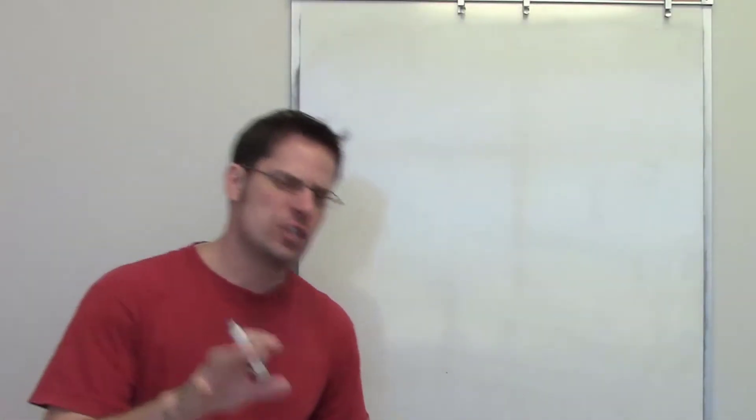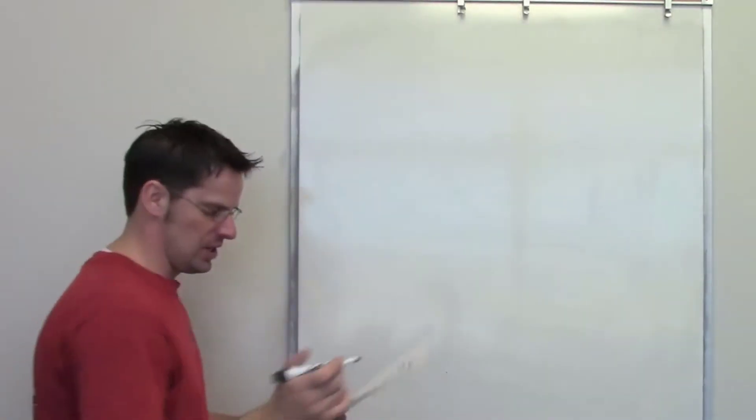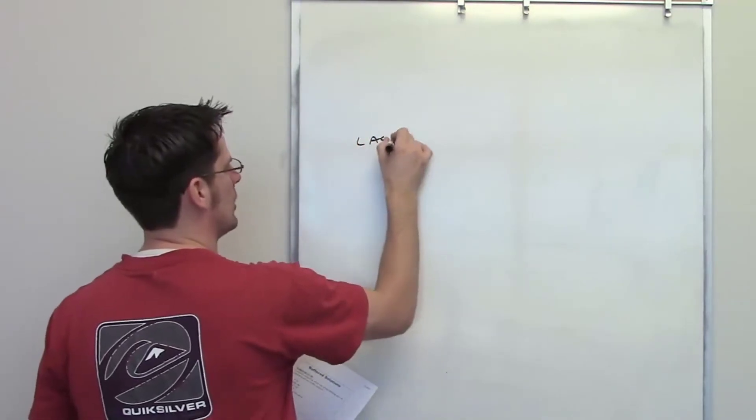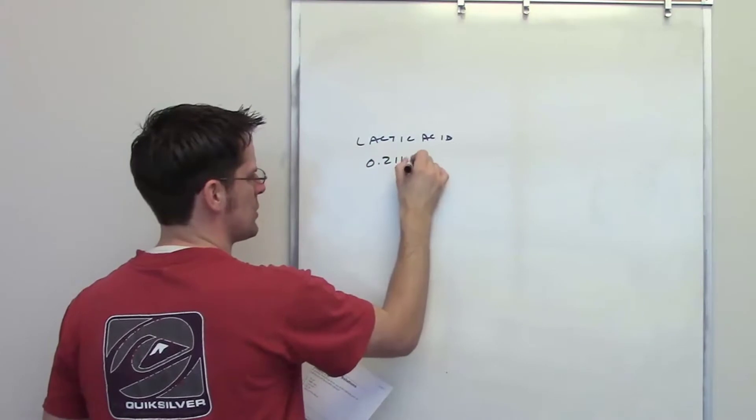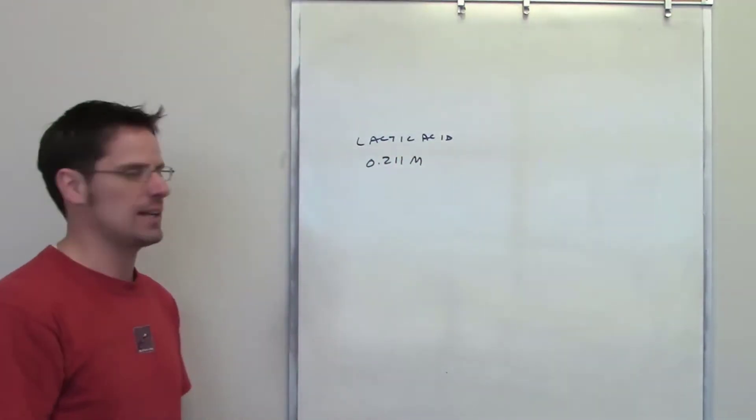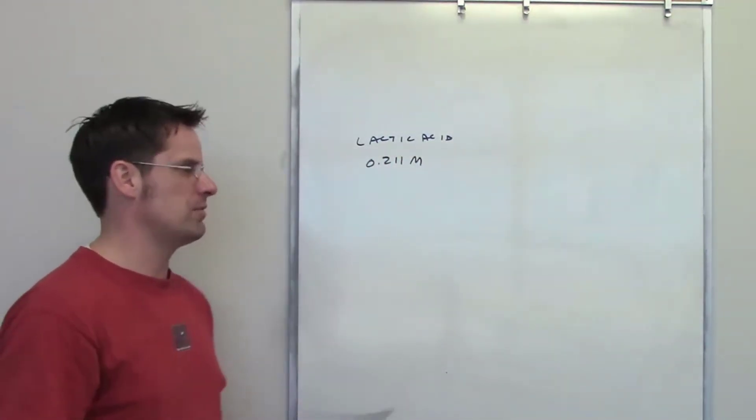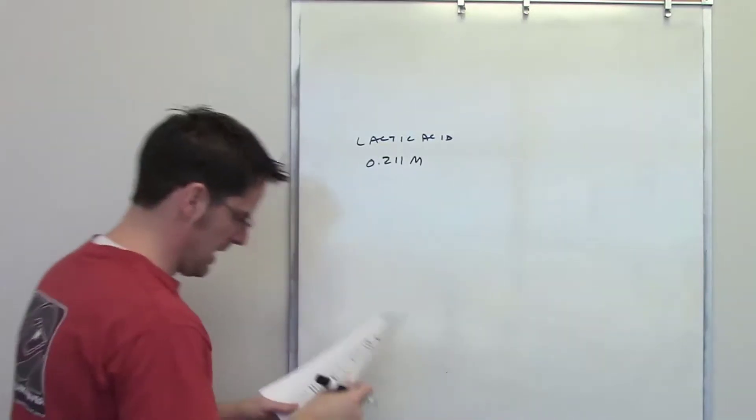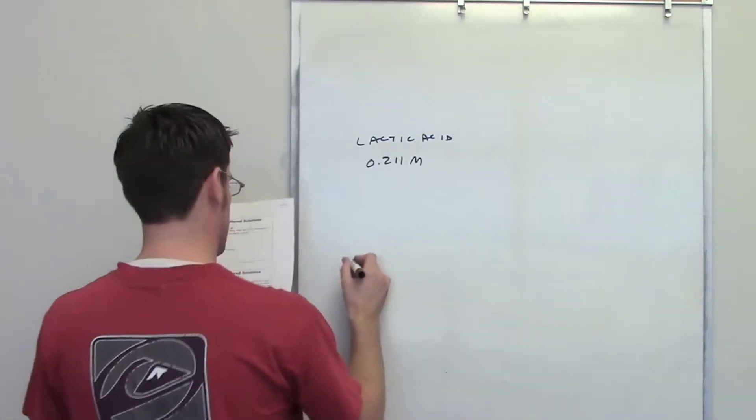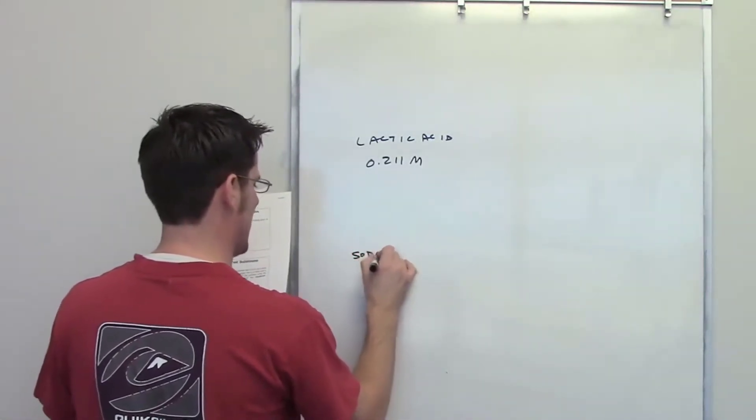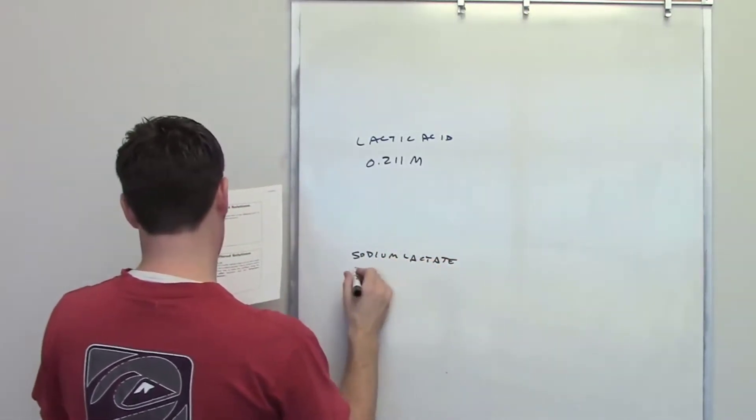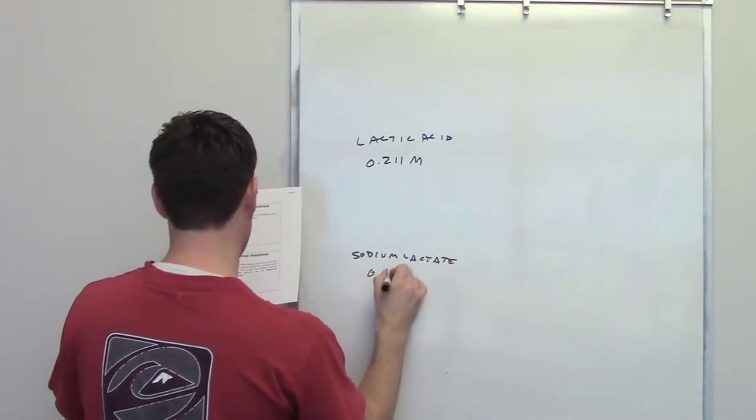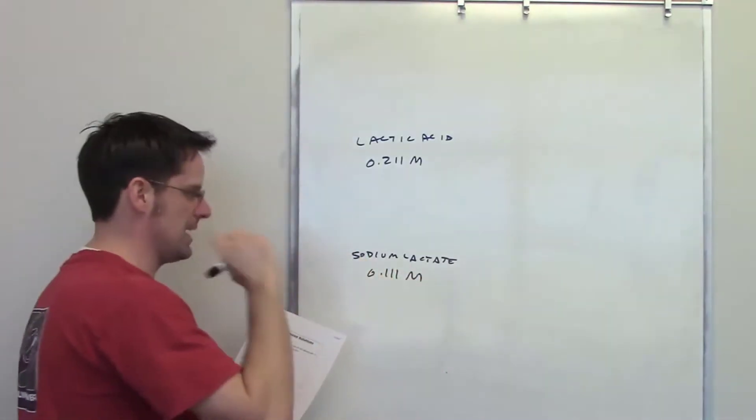This question asks us to determine the pH of a buffer solution that is 0.211 molar in lactic acid. I'll go ahead and write lactic acid here. For this question, you actually don't need to know the structure of lactic acid. I could write out its formula, but for right now I'll just write lactic acid. And then it says it also is, I'll write sodium lactate down here, it says that it is 0.111 molar in sodium lactate.